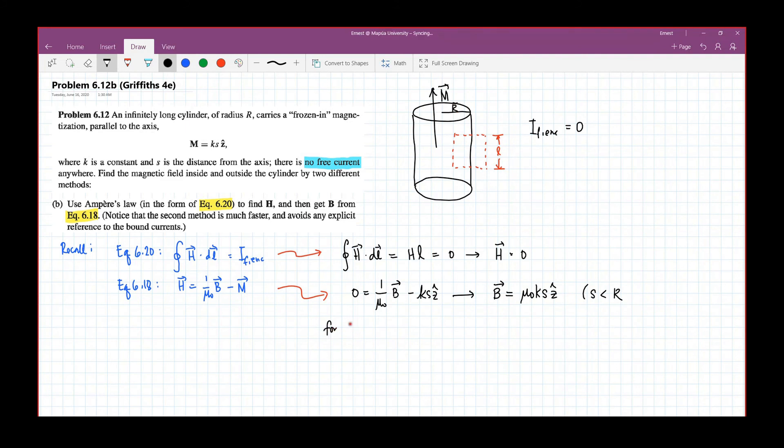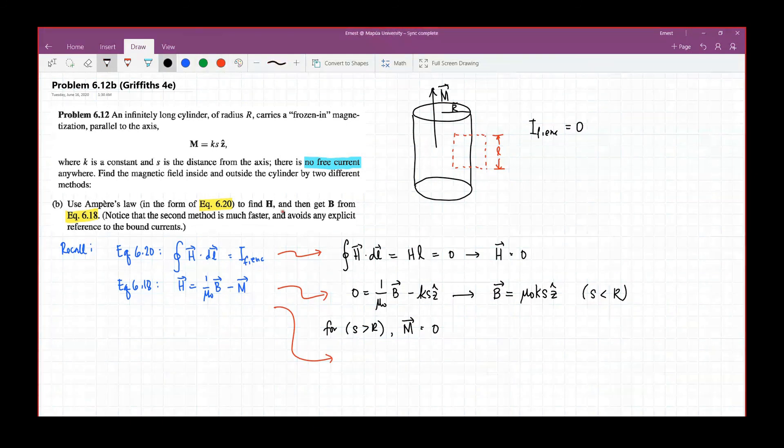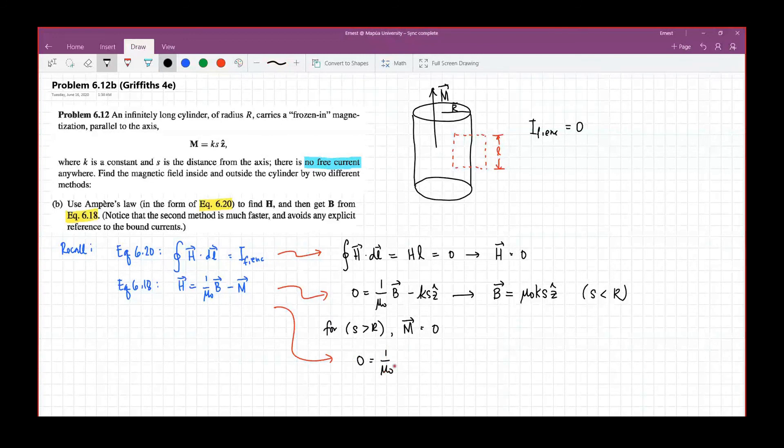Now, how about the outside? For s greater than R, we know that there is no material outside. Therefore, the magnetization is zero outside. And if that's the case, this equation will now be written as zero equals one over mu naught B minus zero, which gives us the magnetic field outside to be zero.